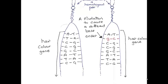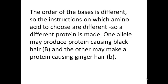So here is our homologous pair, and on the right-hand side I've changed the base order of the sequence of the hair colour gene. The order of the bases is now different, so the instructions on which amino acid to choose to build the protein are now different, and so a different protein is going to be made.